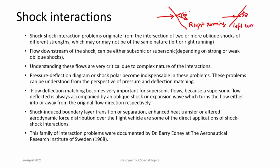When such shocks interact, they may be of the same kind — both right running or both left running — or of opposite kinds, meaning a right running and a left running shock interact. Different kinds of flow features are produced in each case. You can also have a combination of subsonic and supersonic velocities downstream of such shock interactions.